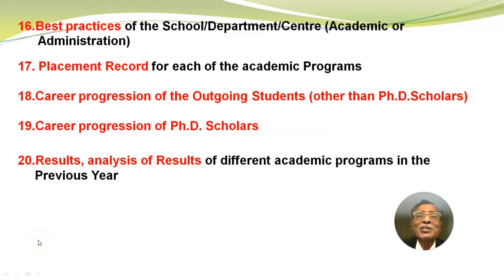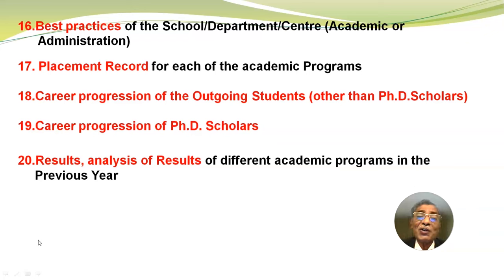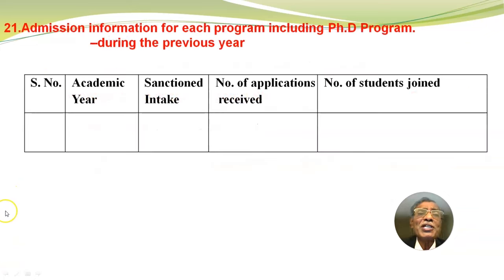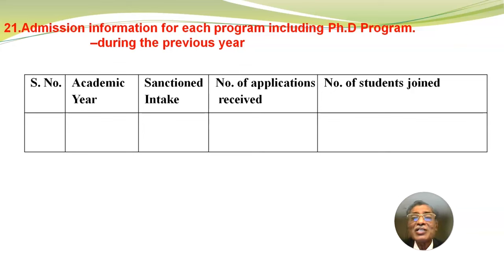Best practices of the school or department or center — academic or administrative. Then placement record for each of the academic programs, career progression of outgoing students other than PhD scholars, career progression of PhD scholars, analysis of results of different academic programs in the previous year, and admission information for each program including PhD during the previous year: serial number, academic year, sanctioned intake, number of applications received, and number of students joined.